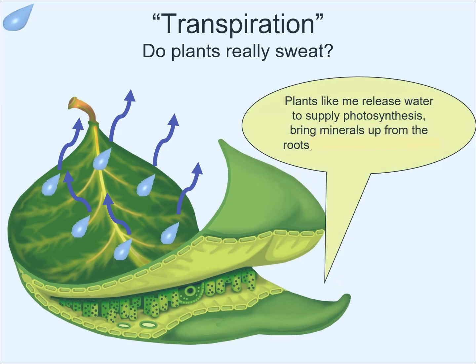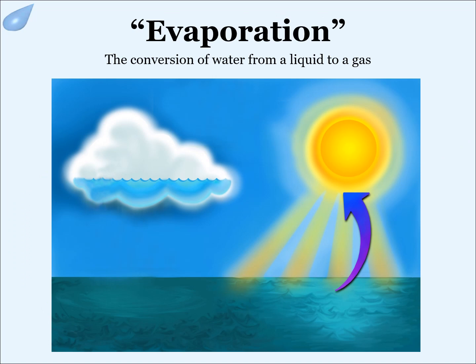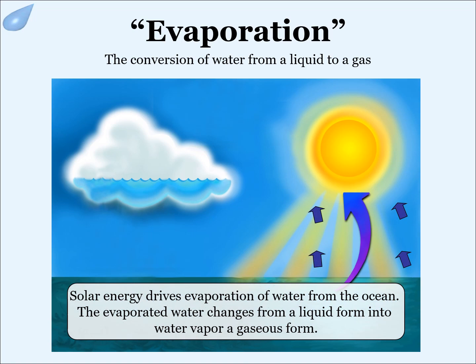Plants release water during photosynthesis as they bring minerals up from their roots. Evaporation is a critical component of the water cycle, which is responsible for clouds and rain. Solar energy drives evaporation of water from oceans, lakes, moisture in the soil, and other sources of water. The evaporated water changes from a liquid form into water vapor, or gaseous form.